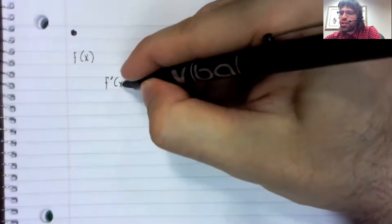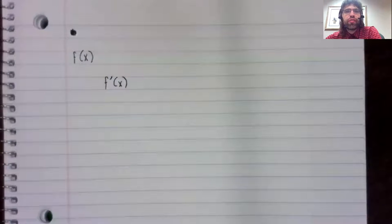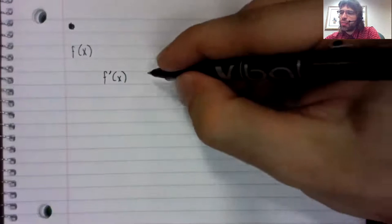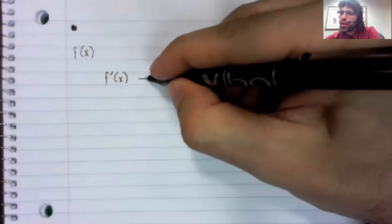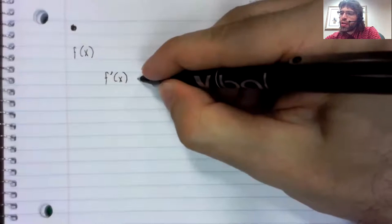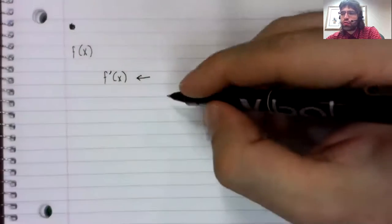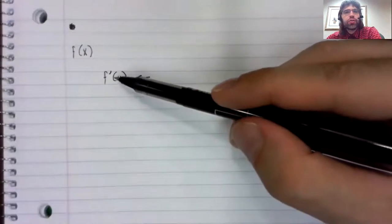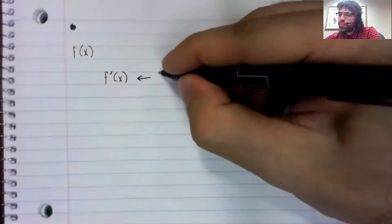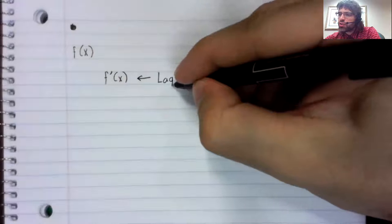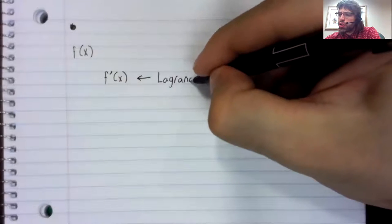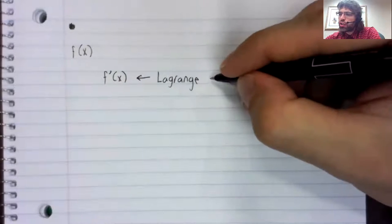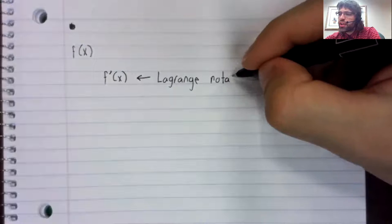We have seen the following notation, f prime of x, but there are other ways of writing the derivative. This notation is called the Lagrange notation.